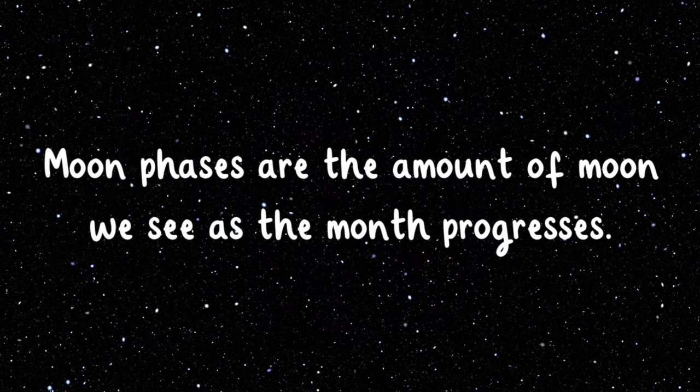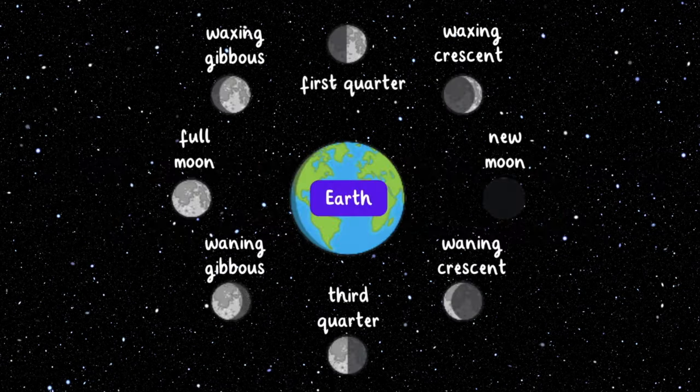Moon phases are the amount of Moon we see as the month progresses. There are eight phases: New Moon, Waxing Crescent, First Quarter, Waxing Gibbous, Full Moon, Waning Gibbous, Third Quarter, and Waning Crescent.